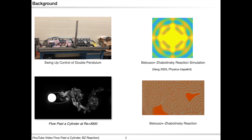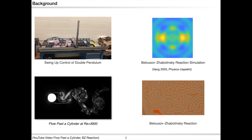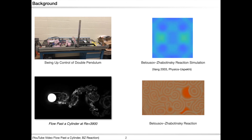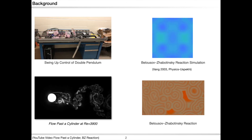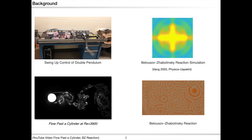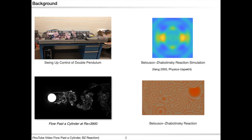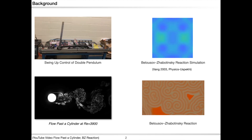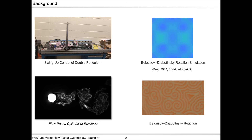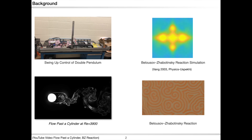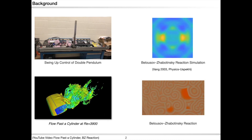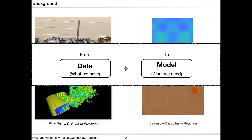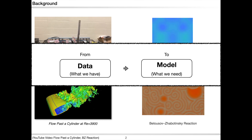The models of the system might be quite complicated to derive by hand. That's why the data-driven modeling approach could help us directly identify those models from data and avoid the tedious work of deriving those equations by hand. In short, what we want to do is extract the models from the data directly.